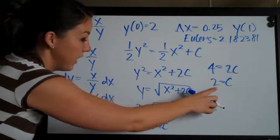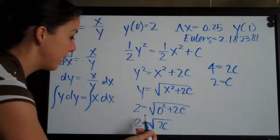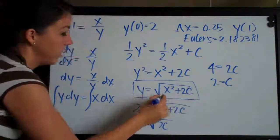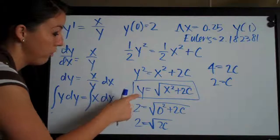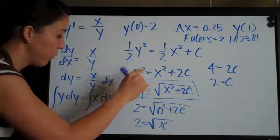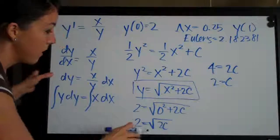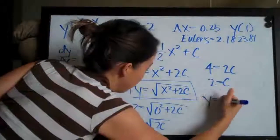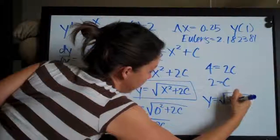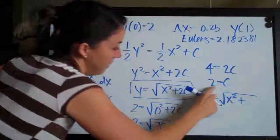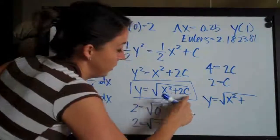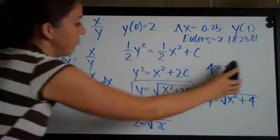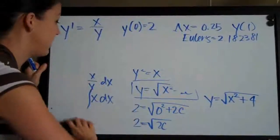So now that we've solved for c and gotten two, we can plug in two into our equation which we found here. You want to plug it in wherever it was that you had solved for y. So we plug in c equals 2, and we'll get y equals the square root of x squared plus four. So that is our equation for y. We went ahead and solved the differential equation.